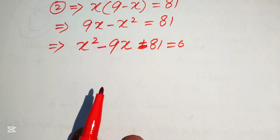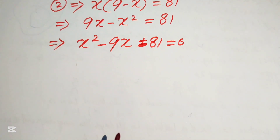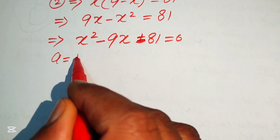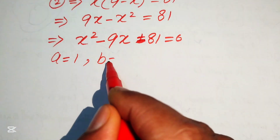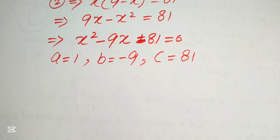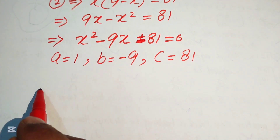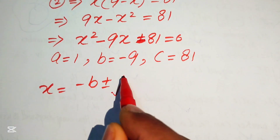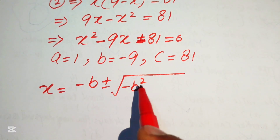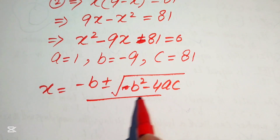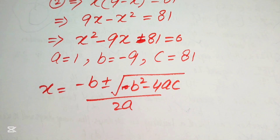We use the quadratic formula to solve this equation. The coefficients are a equals 1, b equals minus 9, and c equals 81. The quadratic formula is x equals minus b plus or minus the square root of b squared minus 4ac, all divided by 2a.